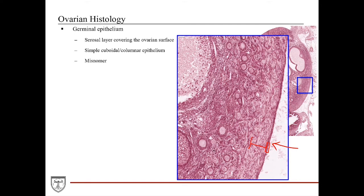In the testes, however, there are also histological structures called the germinal epithelium. But in the case of the testes, the germinal epithelium is actually an appropriate name, since it is referring to the structures that produce the spermatocytes. That will be highlighted in the male reproductive system lecture.